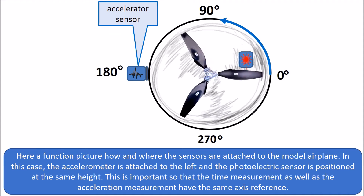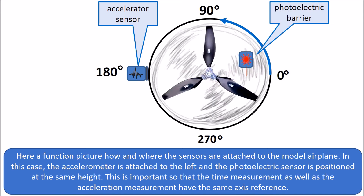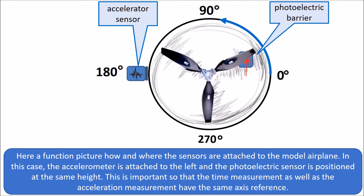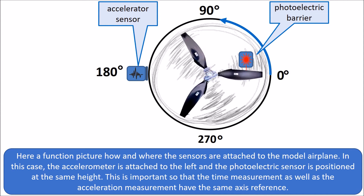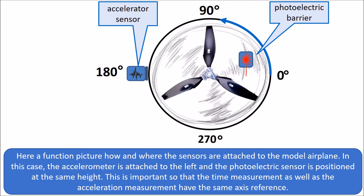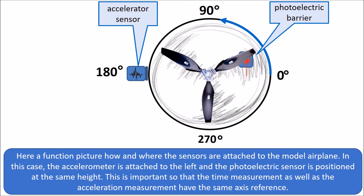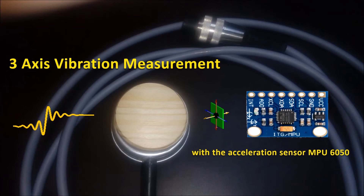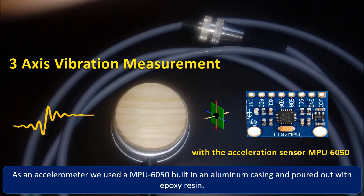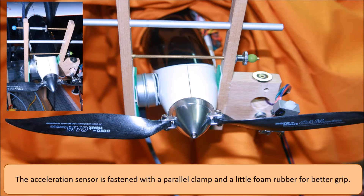The vibration sensor is positioned at the same height. This is important so that the time measurement as well as the acceleration measurement have the same axis reference. As an accelerometer we used an MPU 6050 built into an aluminum casing and poured out with epoxy resin. The acceleration sensor is fastened with a parallel clamp and a little foam rubber for better grip.